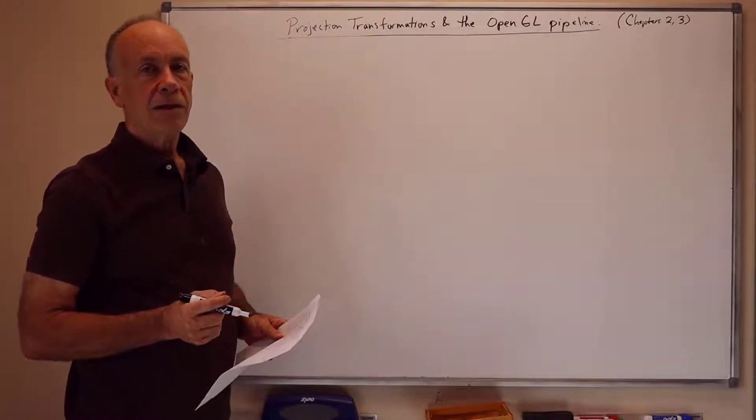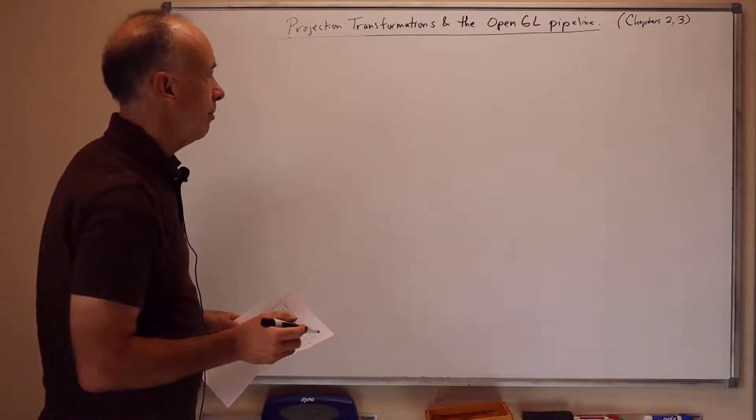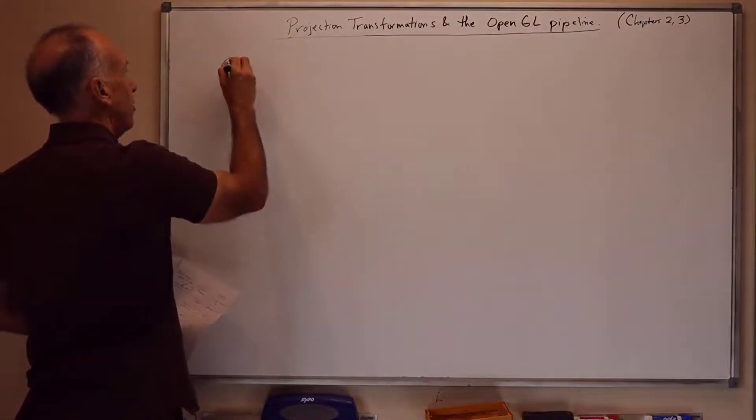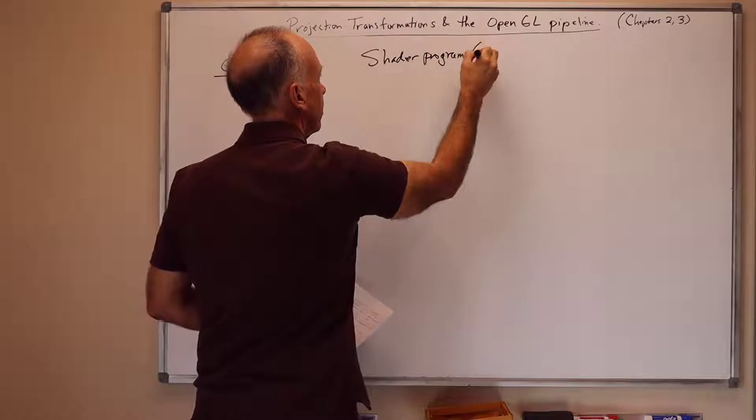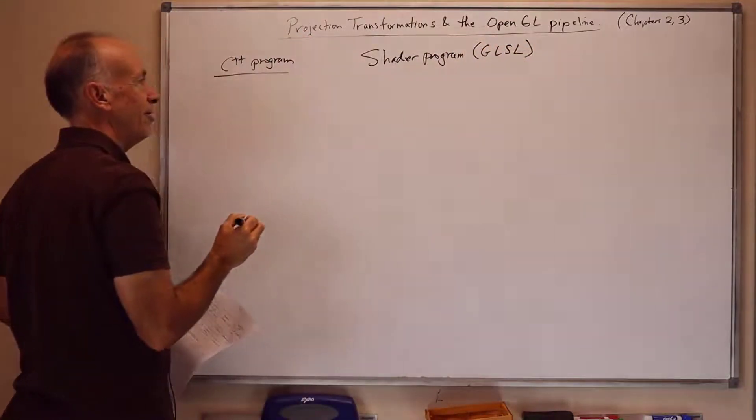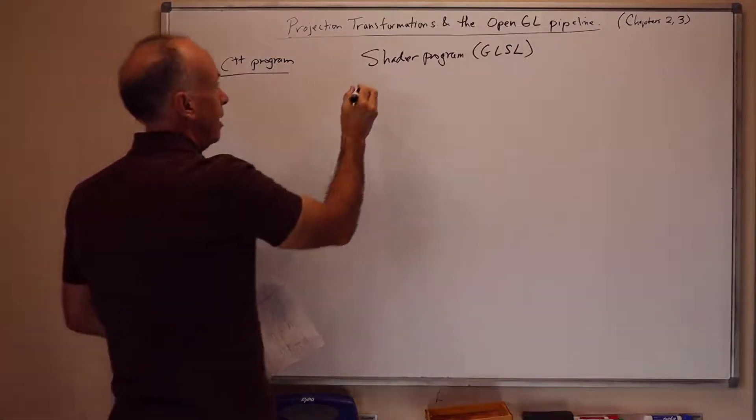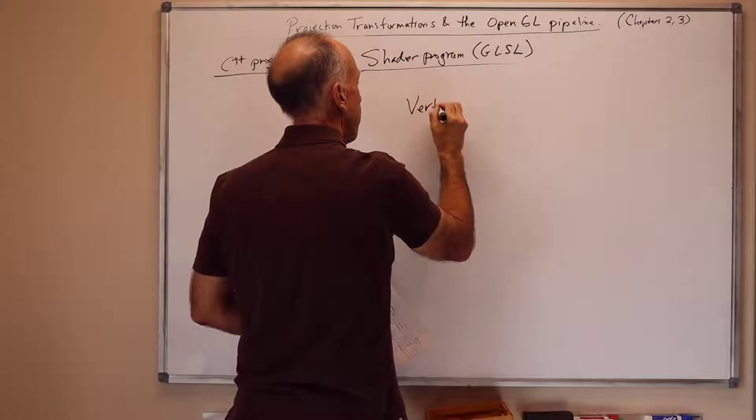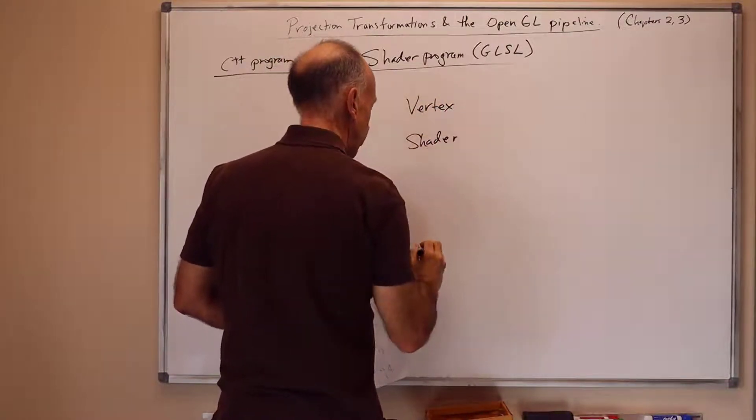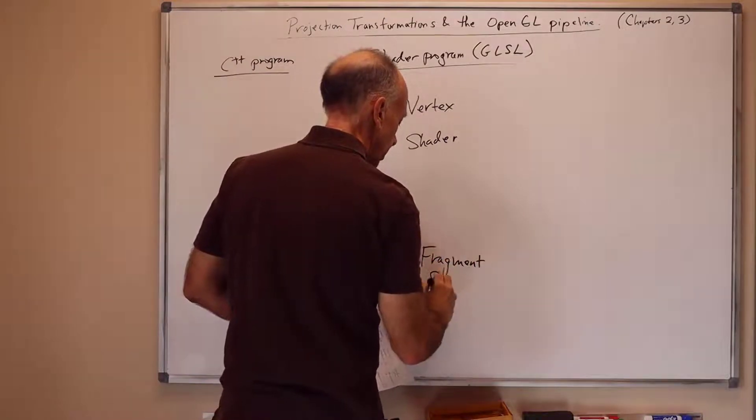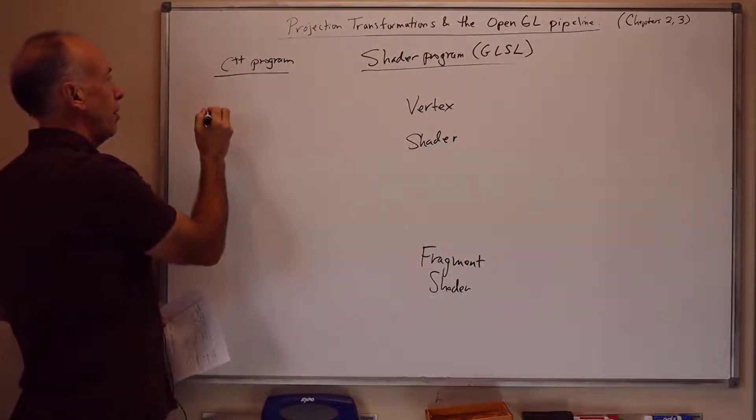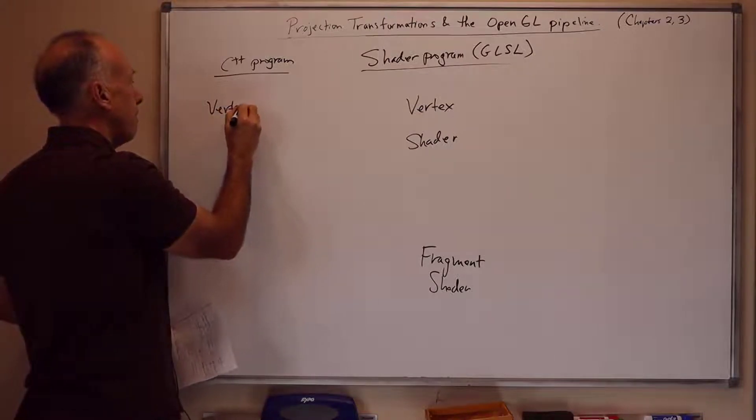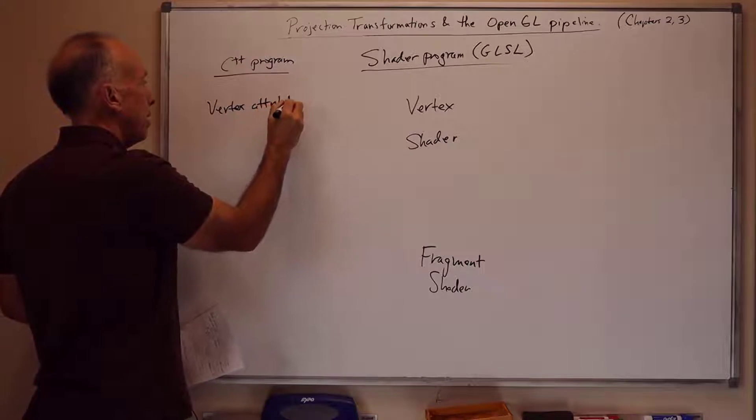So I'm going to draw a somewhat simplified version of the OpenGL pipeline as used from the point of view of the shader program. We'll have two columns here. First of all, there's what the C++ program does. And secondly, there's what the shader program does. And shader programs are written in the language GLSL, which stands for GL Shader Language. GL stands for Graphics Language. And we have a vertex shader, and that'll send data down to a fragment shader. And these are separate small programs that process data.